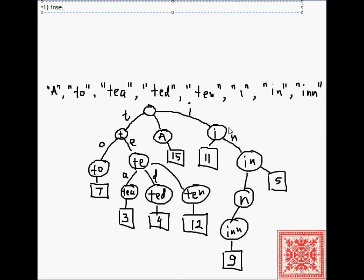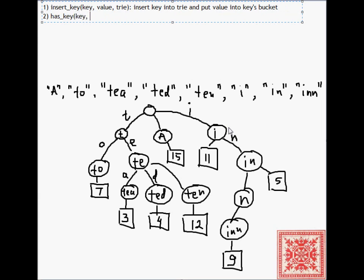Insert_key takes the key, value, and the Trie and it inserts the key into the Trie and puts the value into the key's bucket. Then the second function, has_key, is obvious. It checks if a specific key exists in a Trie, and if it does then it returns true, if it doesn't it returns false.